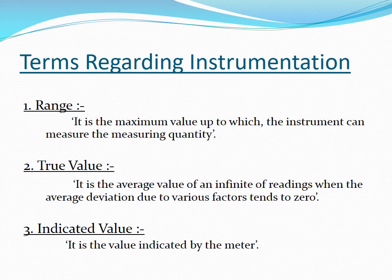The second term is true value. True value is defined as the average value of an infinite number of readings when the average deviation due to various factors tends to zero.